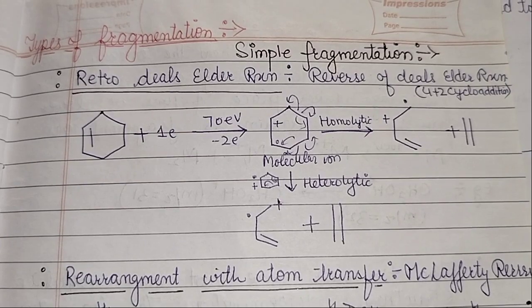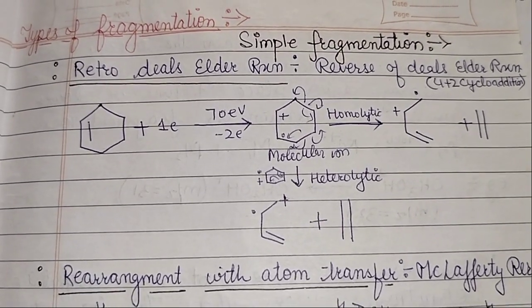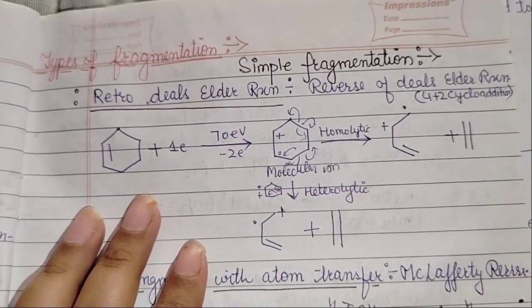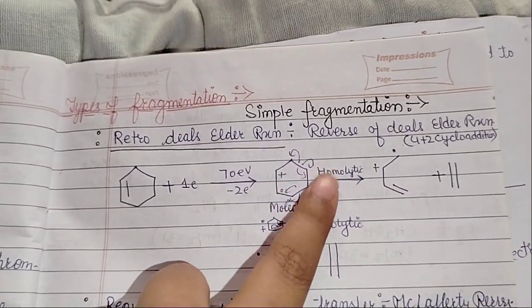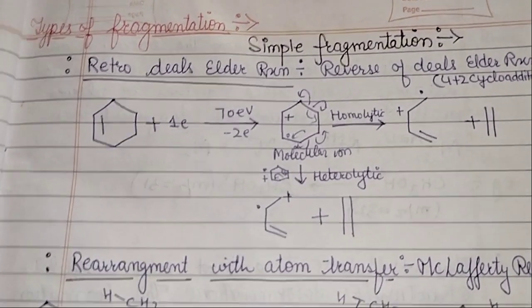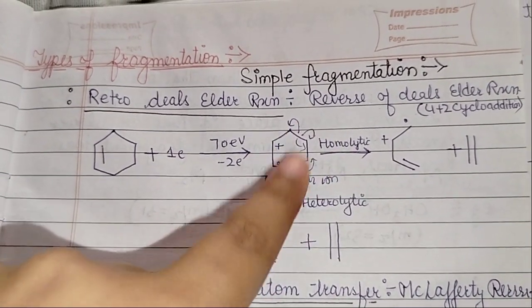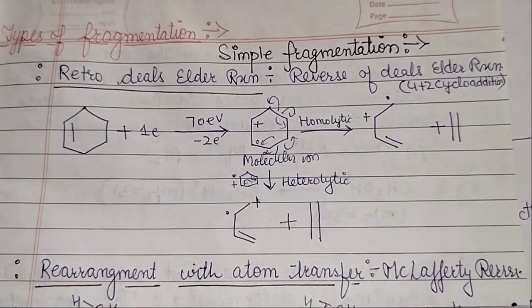Retro Diels-Alder reaction, reverse of Diels-Alder reaction. So what happens in this reaction? We have this fragmentation which can be two types: one is homolytic and the second one is hydrolytic. So through this diagram you can see the arrows through which way we have retro Diels-Alder reaction.